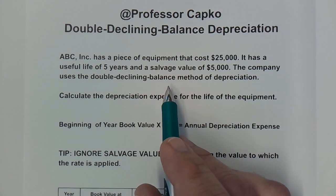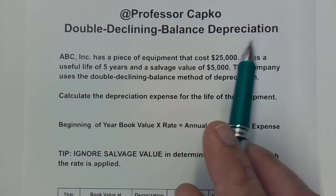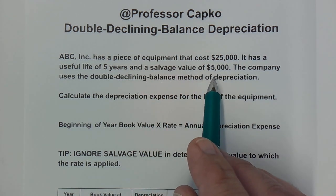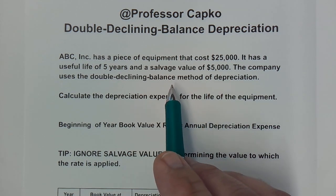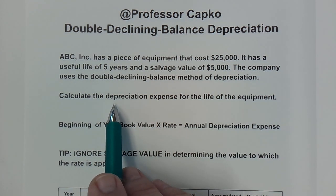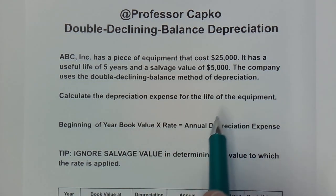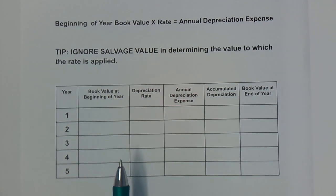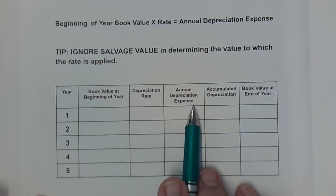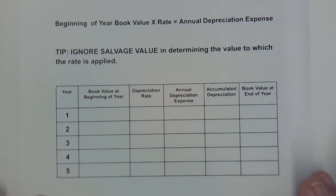In our example, we're going to be calculating the depreciation for a piece of equipment owned by fictional ABC Inc. The equipment cost $25,000, it has a useful life of five years, and a salvage value of $5,000. The company uses the double declining balance method of depreciation, and we're going to calculate the depreciation expense for each of the five years — including beginning book value, depreciation rate, annual depreciation expense, accumulated depreciation, and ending book value.